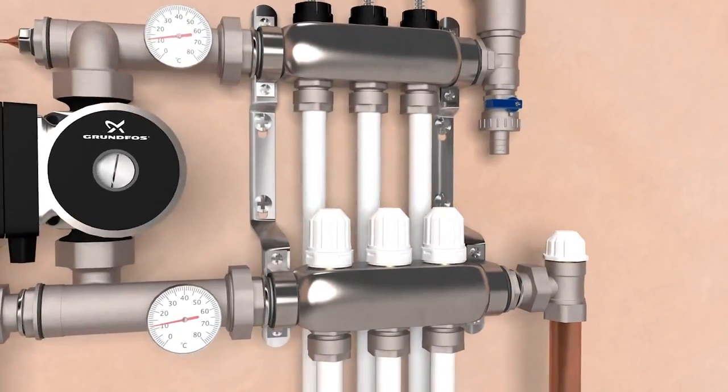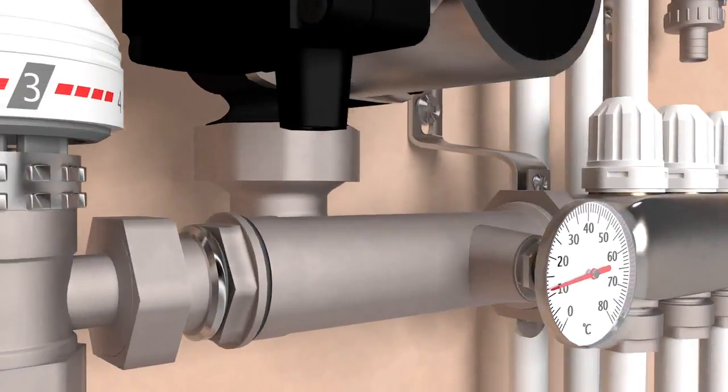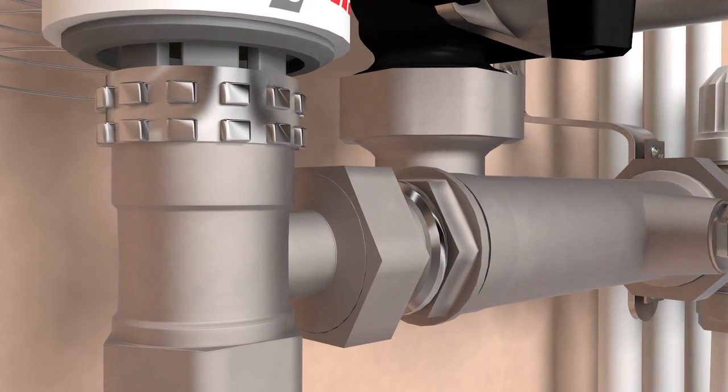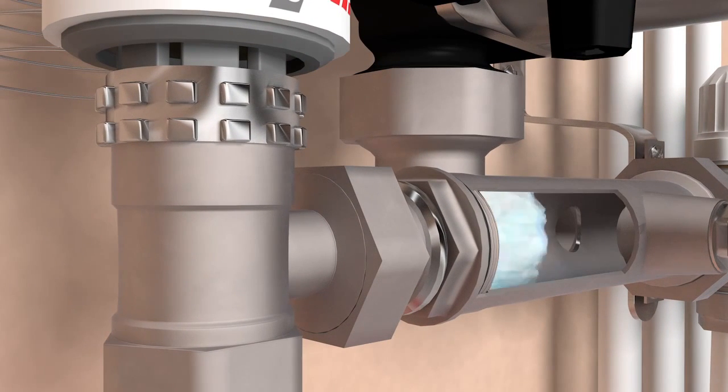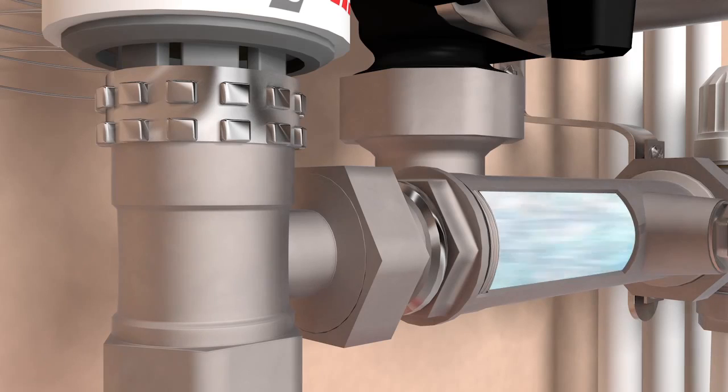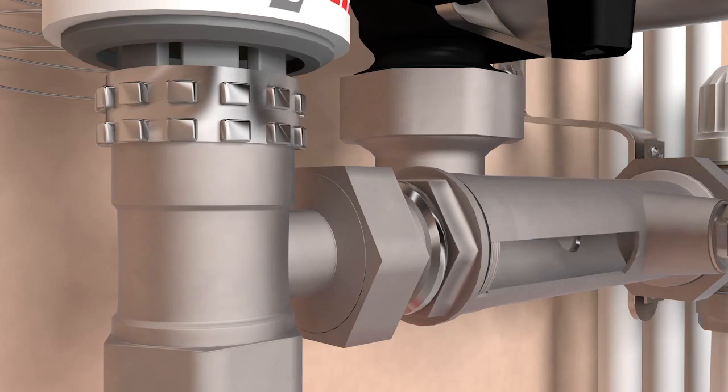Let's take a closer look at how the manifold works. When the warm water reaches the manifold it passes through the thermostatic blend valve. This blending valve mixes the warm water supplied from your heat source with the ambient temperature water already inside the manifold.